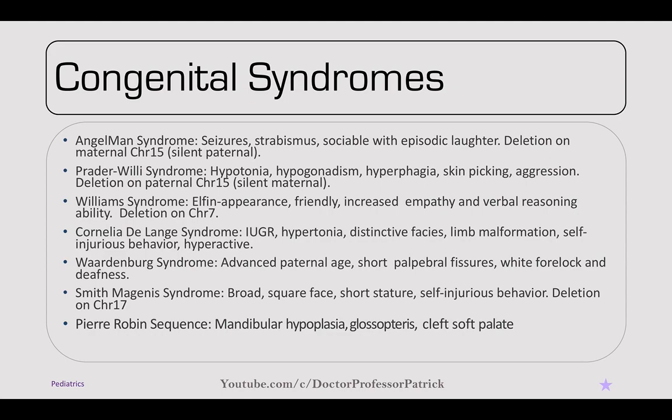Williams syndrome commonly presents with an elf-like appearance — very friendly with increased empathy and verbal reasoning ability. It's a deletion on chromosome 7. I think of this like Will Ferrell in Elf. Cornelia de Lange syndrome presents with intrauterine growth restriction, hypertonia, distinctive facies, lung malformations, and self-injurious behaviors.